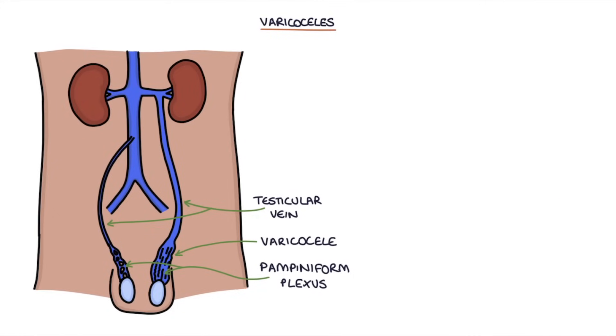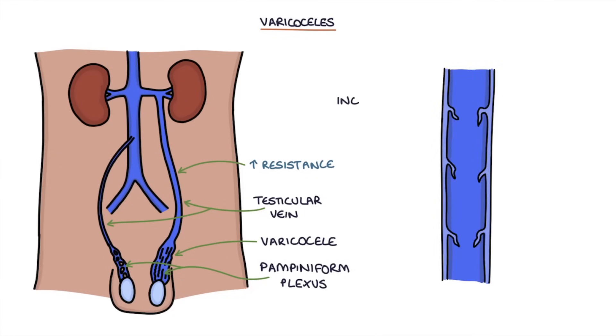Varicoceles are the result of increased resistance in the testicular vein. Essentially, more resistance in the testicular vein means it's more difficult for the pampiniform plexus to drain, so it leads to back pressure and swelling of the pampiniform plexus. Incompetent valves in the testicular vein allow blood to flow back from the testicular vein into the pampiniform plexus.